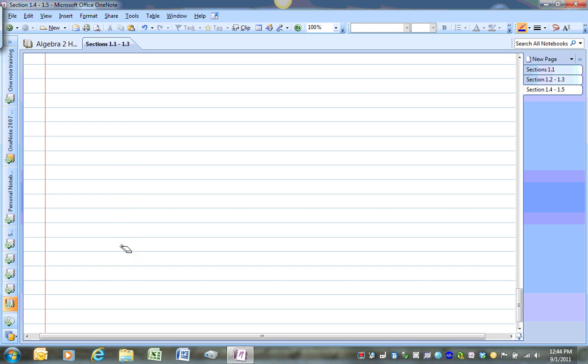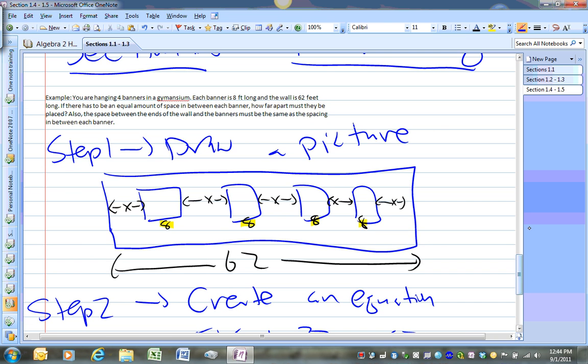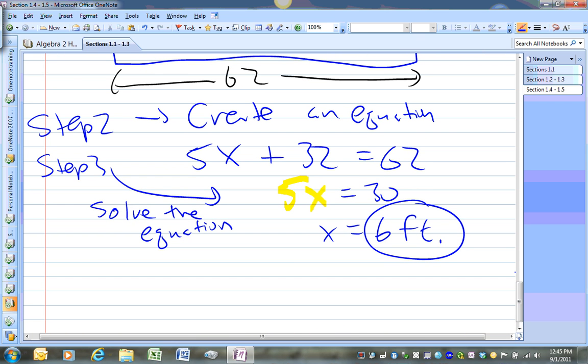So that's basically what we do for these kind of word problems. Sometimes you may not be able to draw a picture. So maybe a verbal model could be good. So instead of drawing a picture, you could write a verbal model. That might help too. But that should always be your first step to be able to conceptualize a word problem.